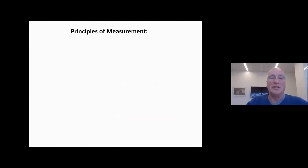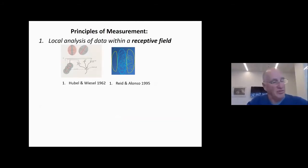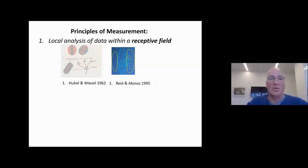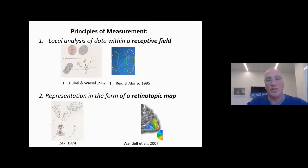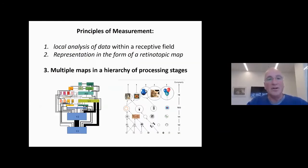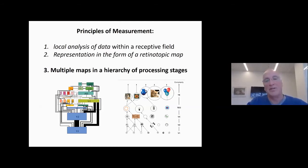When you think about principles of measurement, there are elementary principles: one is a local analysis of data within a receptive field, following Hubel and Wiesel's work showing simple cells, complex cells, and so on. There's a representation in a retinotopic map, so neighboring neurons map neighboring areas in the visual field. Furthermore, there are multiple maps in a hierarchy of processing stages, so that initially neurons are sensitive to very basic features, and as you move up in the hierarchy, neurons have larger receptive fields and are sensitive to more and more complex features.